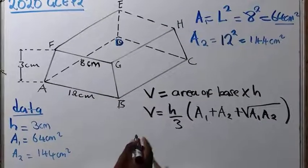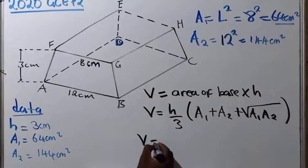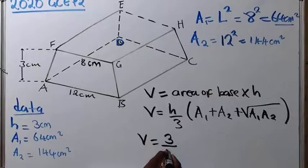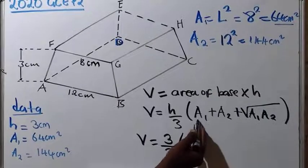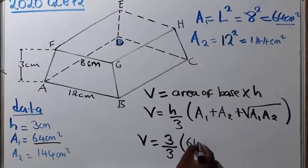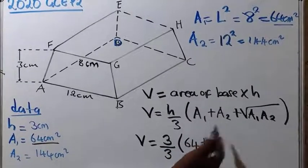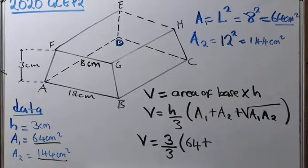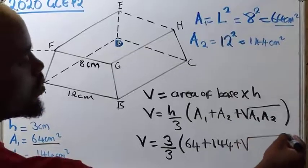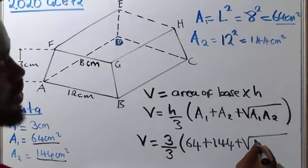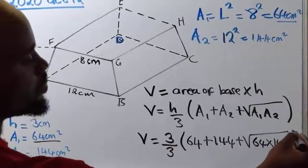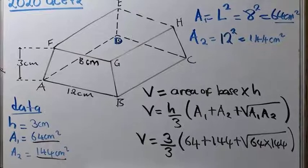From here, let's just substitute. Where we say volume is equal to what is the height here? The height we have said is 3 over 3. Open bracket. Area 1. What is our area 1? It says 64. So it says 64 plus what is our area 2? Our area 2 is 144.